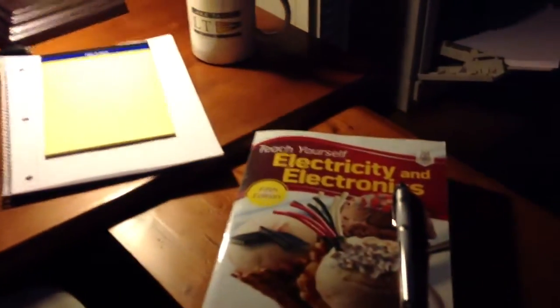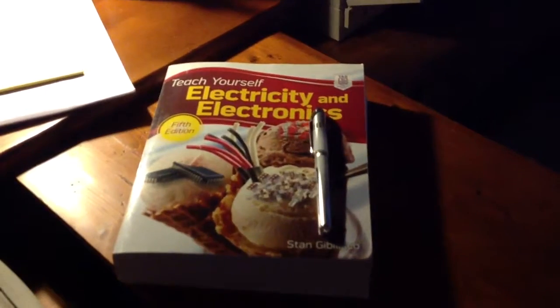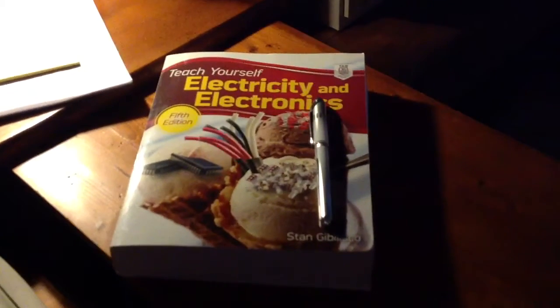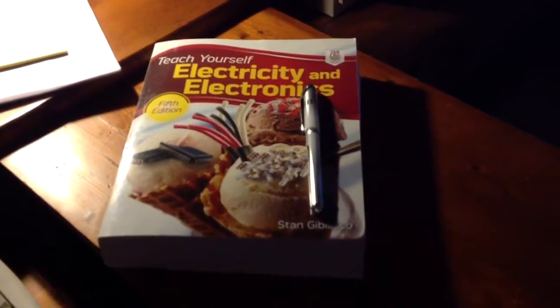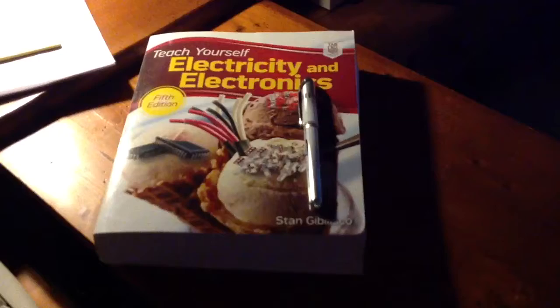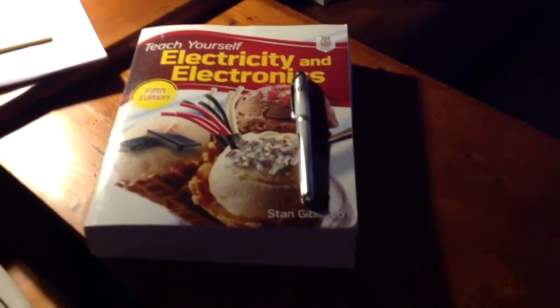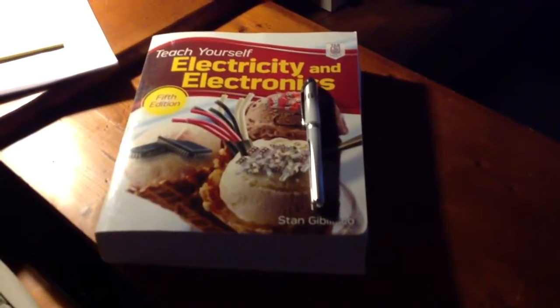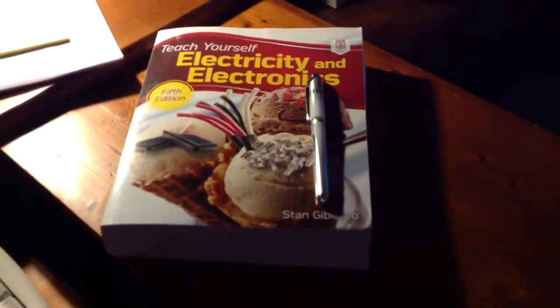You may want to consider the fact that 1.5 gigahertz is a thousand times the frequency at 1.5 megahertz. 1.5 megahertz is about 200 meters. So 1.5 gigahertz is about 200 millimeters or only two-tenths of a meter.